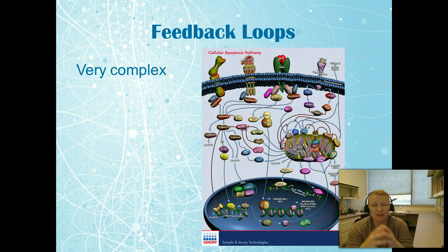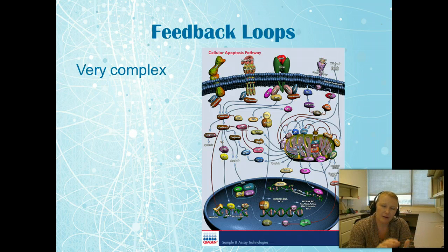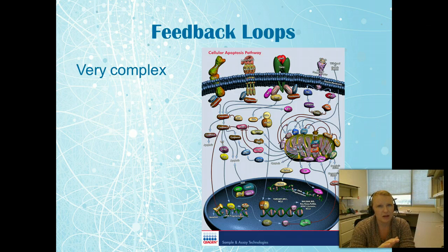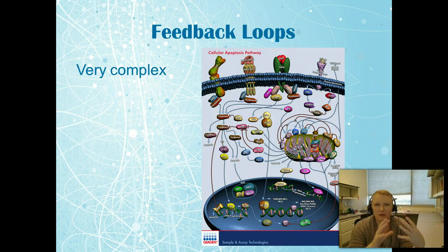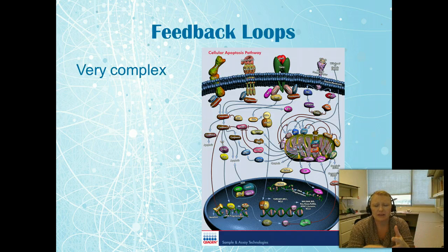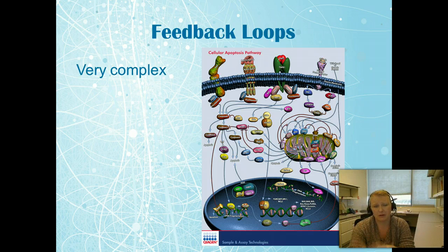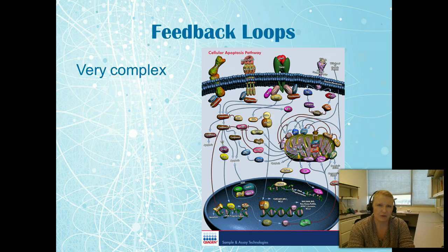Feedback loops can do all sorts of things, and importantly as a researcher, if you target a protein or turn off a process by targeting an enzyme or receptor, chances are something else in the cell will be turned on — cells are full of safety features. You also need to consider what other pathways you may be altering, which is critical any time you introduce drugs or change a system.